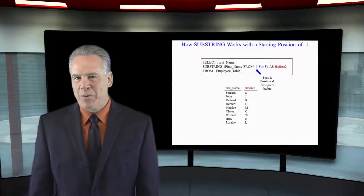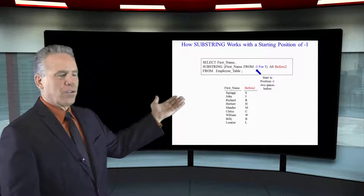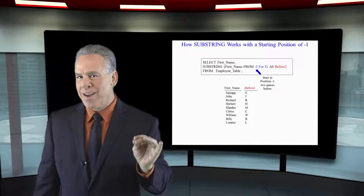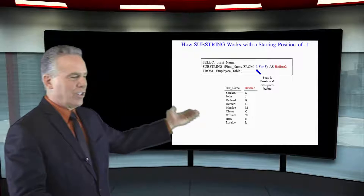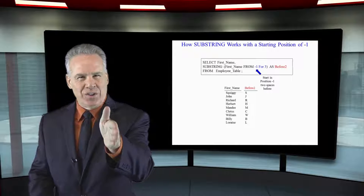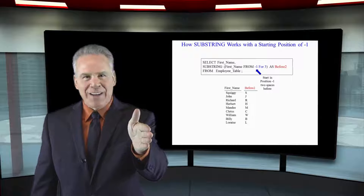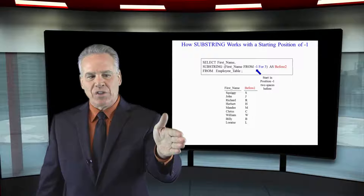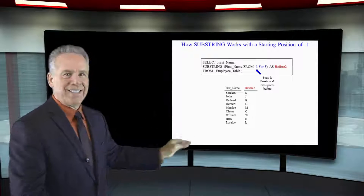I really want to make this point very clear. I'm going to select first name, substring first name from minus one for three. It takes 'squiggy' and says: position one is the S, position zero is outer space one in front of it, and minus one is two spaces in front of squiggy. So going for three positions, it's going to return: space, space, S.